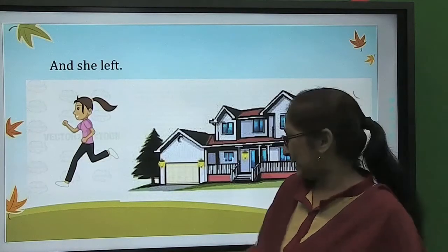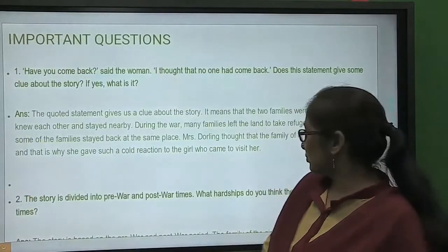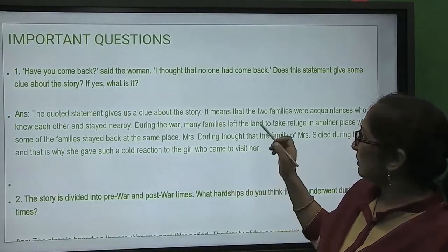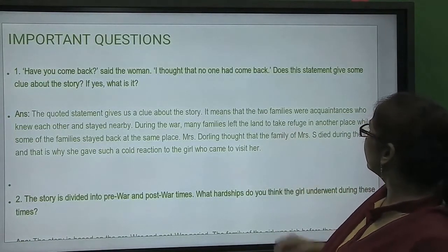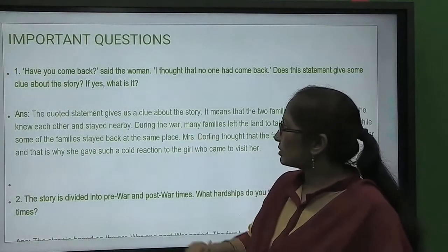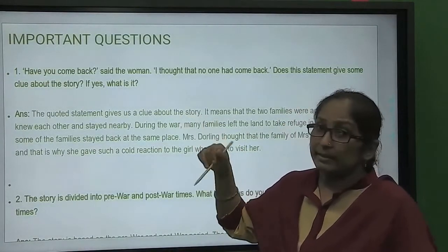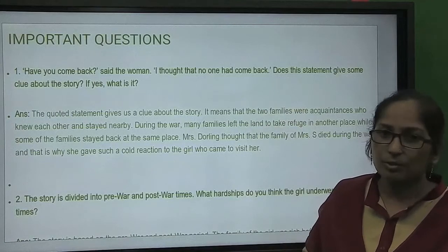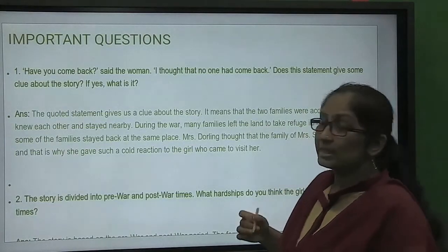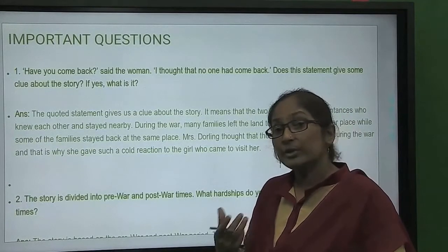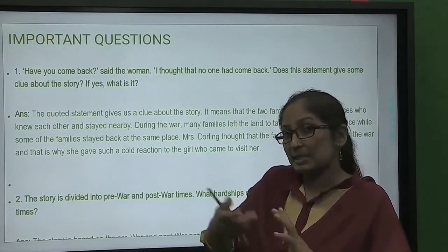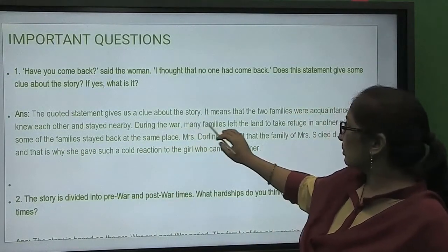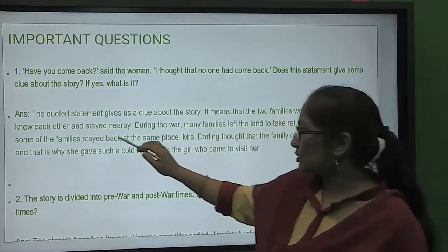Now there are some important questions for this chapter. One important question is: 'Have you come back?' said the woman. 'I thought that no one had come back.' This statement gives some clues about the story. It means that the quoted statement gives us a clue — the two families were acquaintances who knew each other.